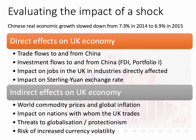The second-round indirect effects are often even more powerful. What happens in China will impact world commodity prices — the price of oil, copper, and other essential raw materials. A Chinese slowdown could tip more countries into deflation. It will impact other nations with whom the UK trades, for example Australia, which is highly dependent on Chinese growth. There are wider fears that a Chinese slowdown could prompt a burst of protectionism, with countries introducing tariffs alleging Chinese dumping, and it could increase the volatility of foreign exchange. In short, an external shock such as the Chinese slowdown can have direct and indirect effects on the UK.